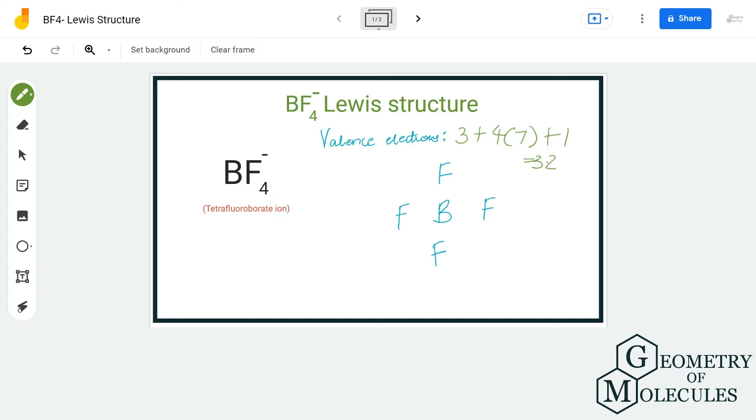Now once we know the number of valence electrons, it becomes relatively easy to place atoms and electron pairs for showing bonds. Boron atom will take the central position and all the fluorine atoms will be arranged around it like this.